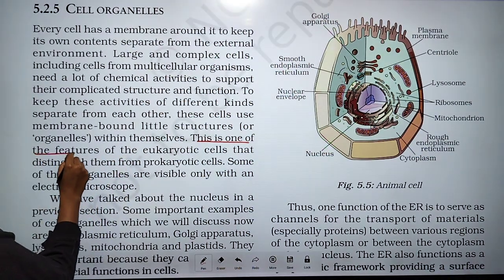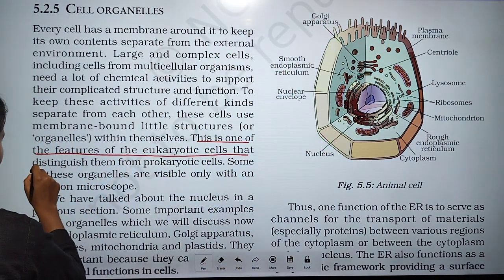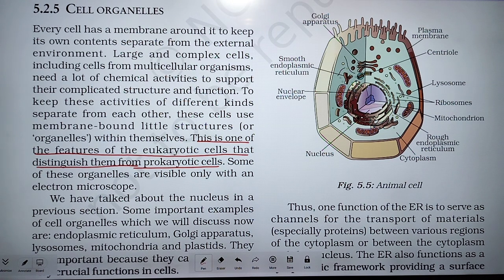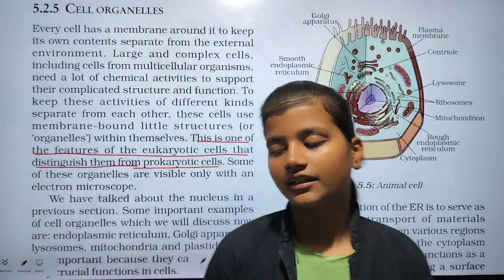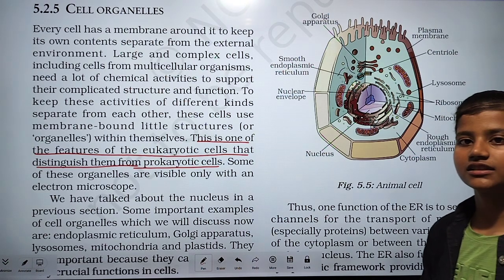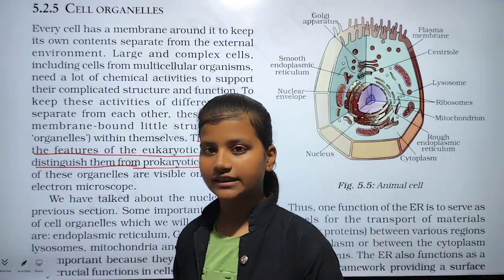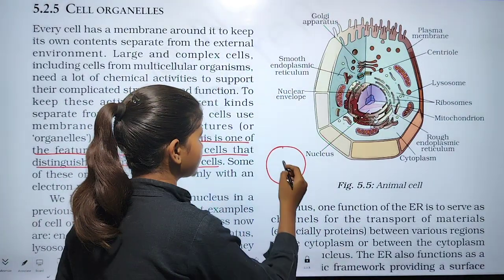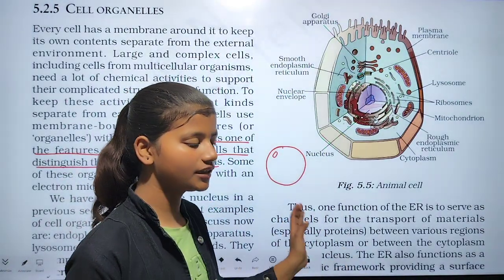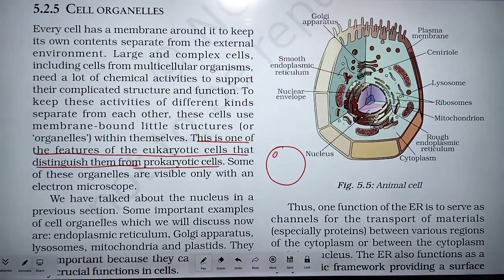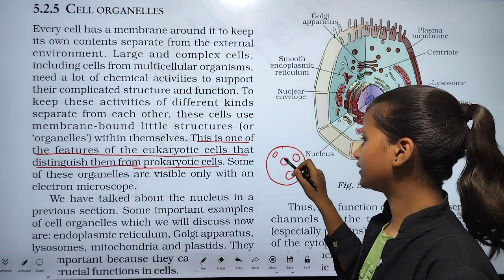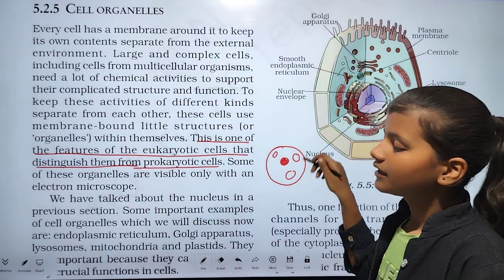These membrane-bounded structures are one of the features of eukaryotic cells that distinguish them from prokaryotic cells. In a prokaryotic cell, no membrane-bound organelles are present, but in a eukaryotic cell, many types of organelles are present.